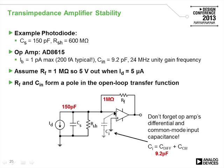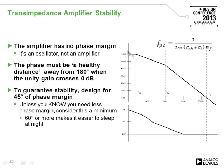When looking at op-amp specifications, you'll see a differential input capacitance and a common-mode input capacitance. The actual input capacitance used to model the circuit is the sum of both, which for the AD8615 is about 9.2 pF. The transfer function of the basic circuit has the open-loop pole due to amplifier roll-off, plus a second pole due to the shunt capacitance, input capacitance, and feedback resistance.